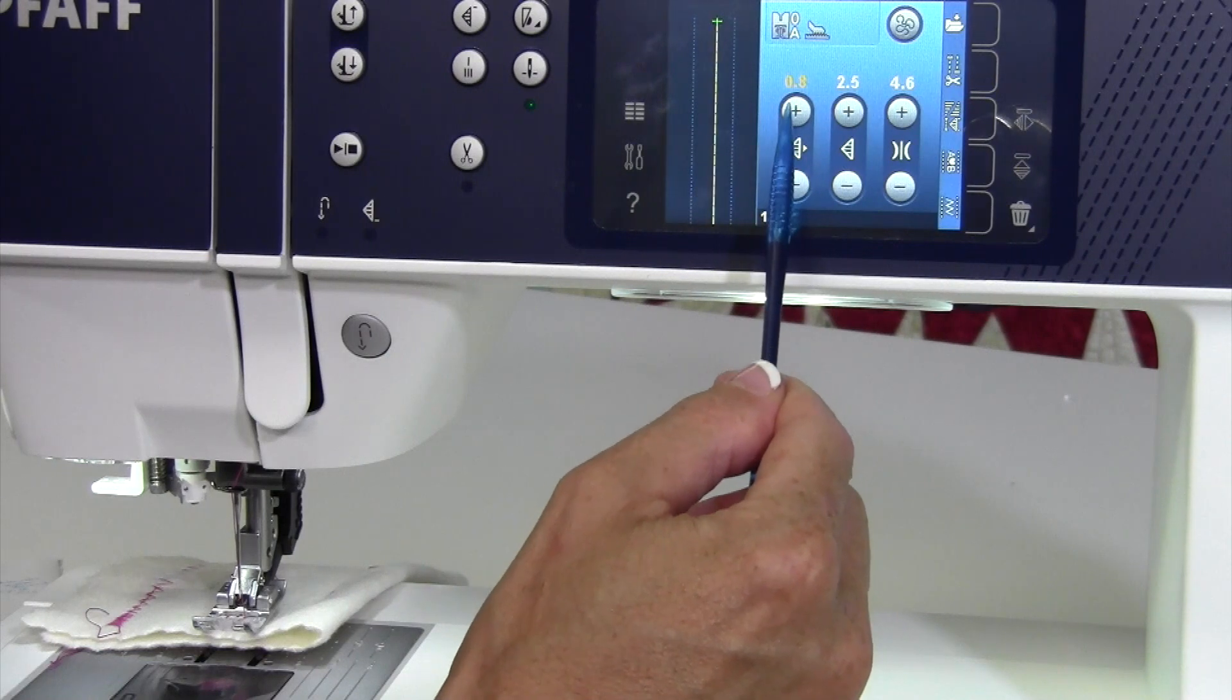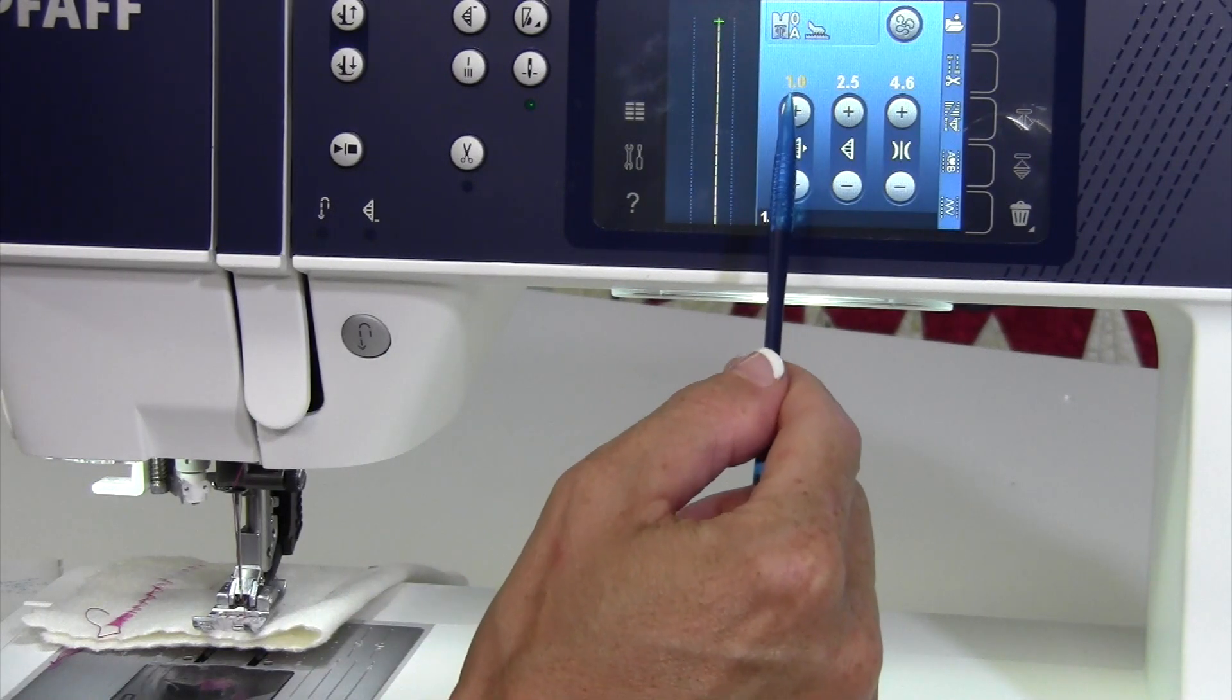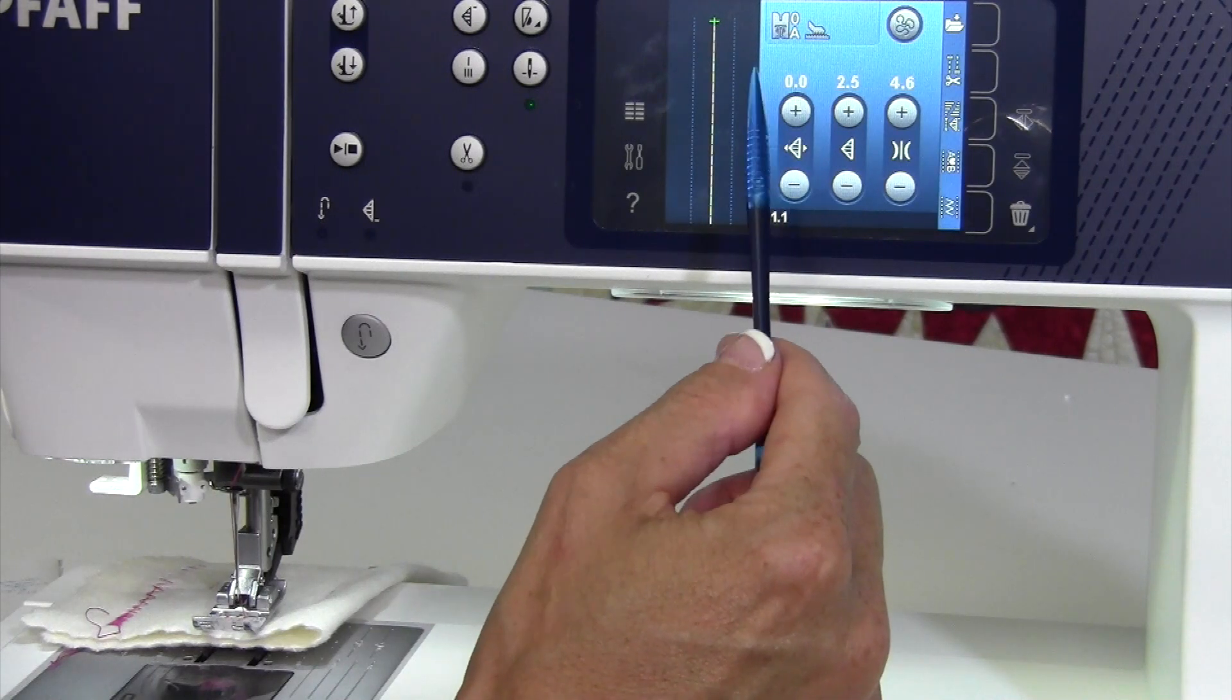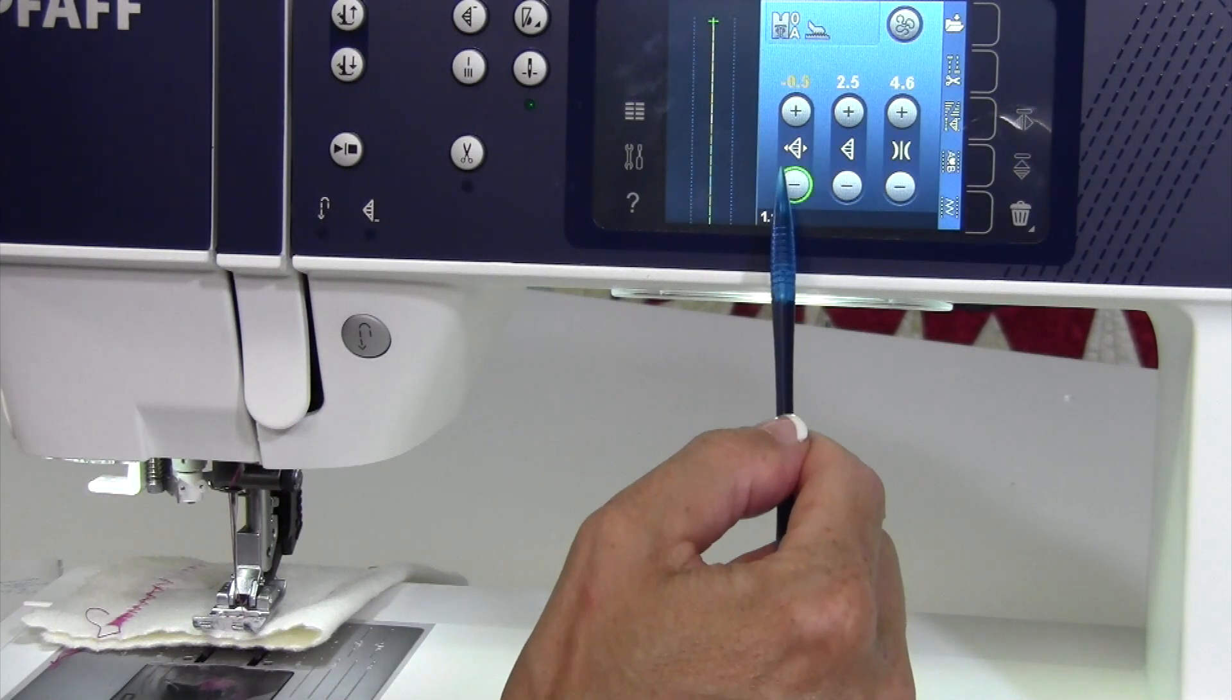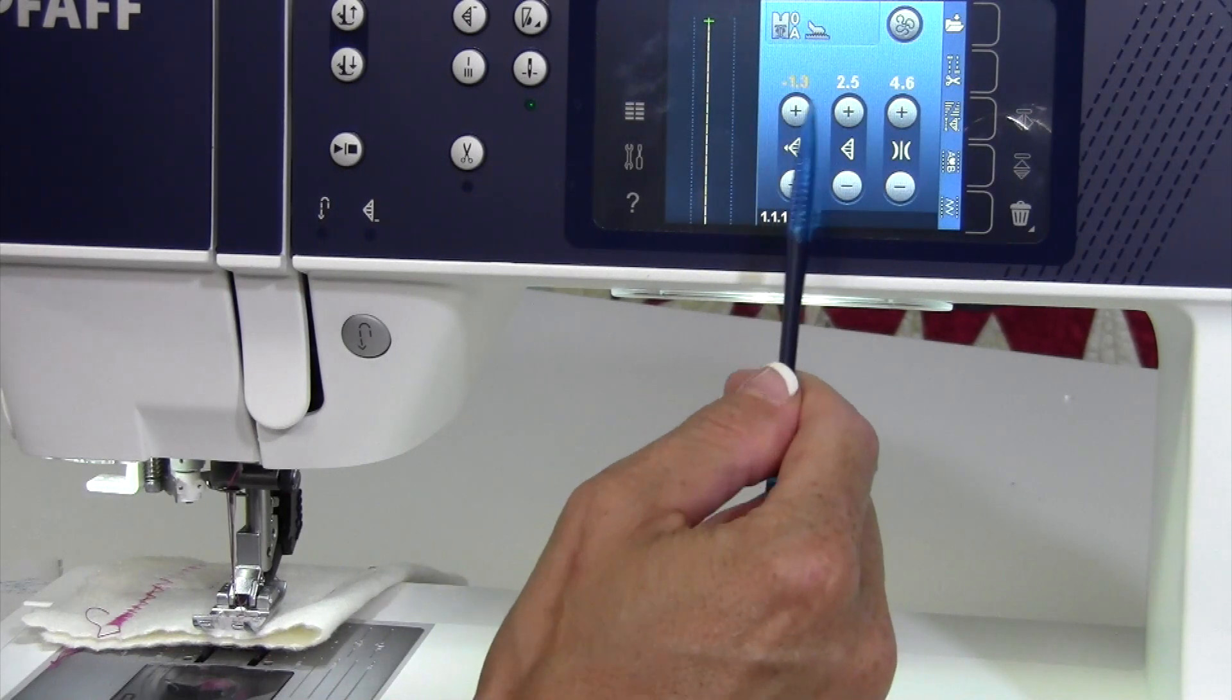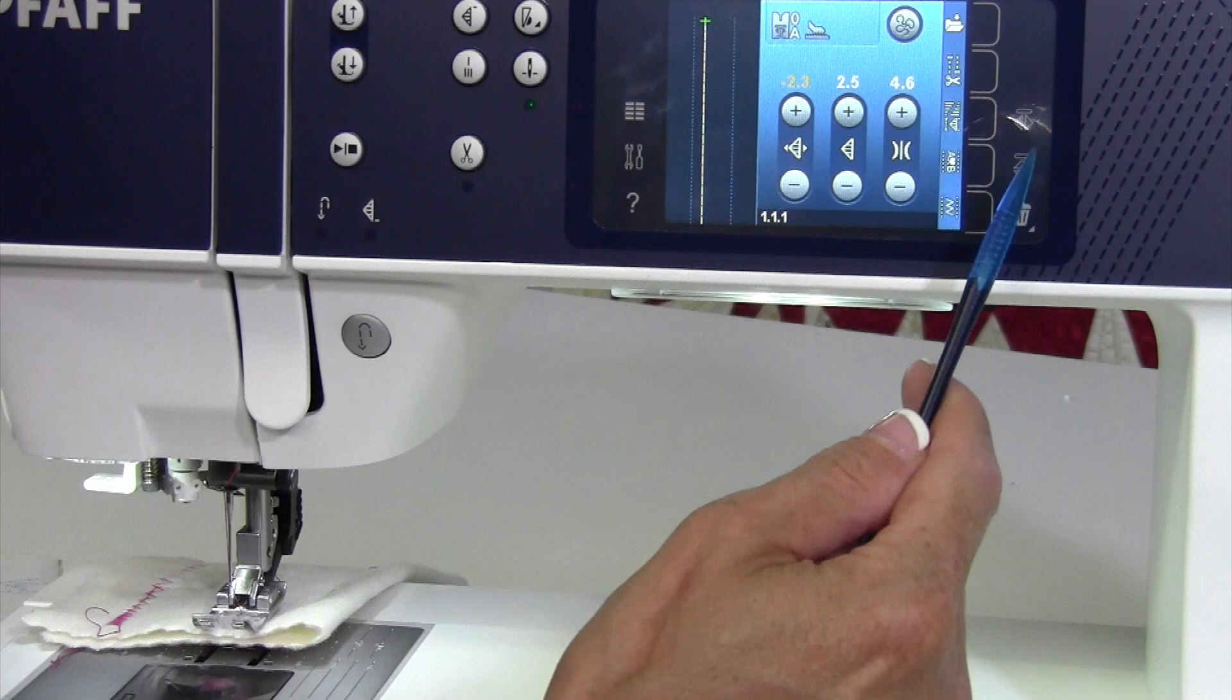As your needle position changes, remember your numbers turn yellow. When you're back to normal, which is 0.0, that is the center, and it's also white numbers. If we go the other way, you get a minus version, and that's to the other side.